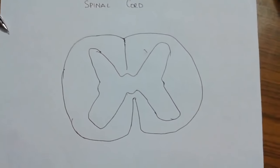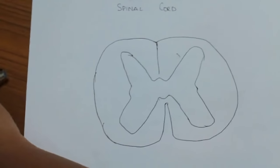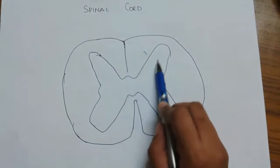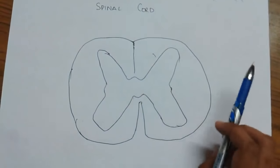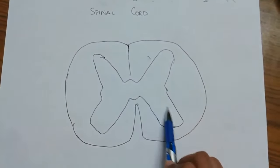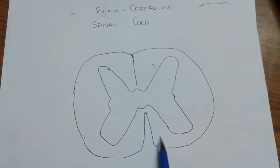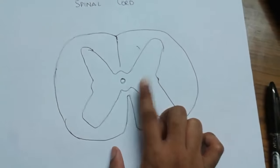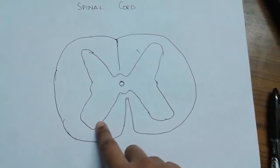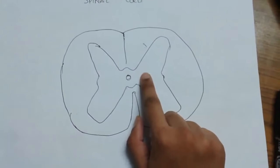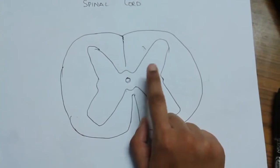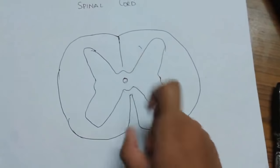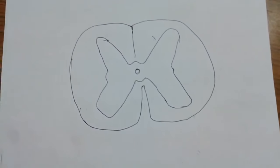In this lecture I'm going to deal with the cross sections of spinal cord only. The gross and external features will be dealt in another lecture. In the cross section you'll be seeing the gray matter. The spinal cord has outer white matter and inner gray matter. This butterfly-shaped thing is the inner gray matter, whereas the outer part is the white matter. The round structure in the center is the central canal. In the gray matter all the nuclei are present, whereas in the white matter all the tracts are found.